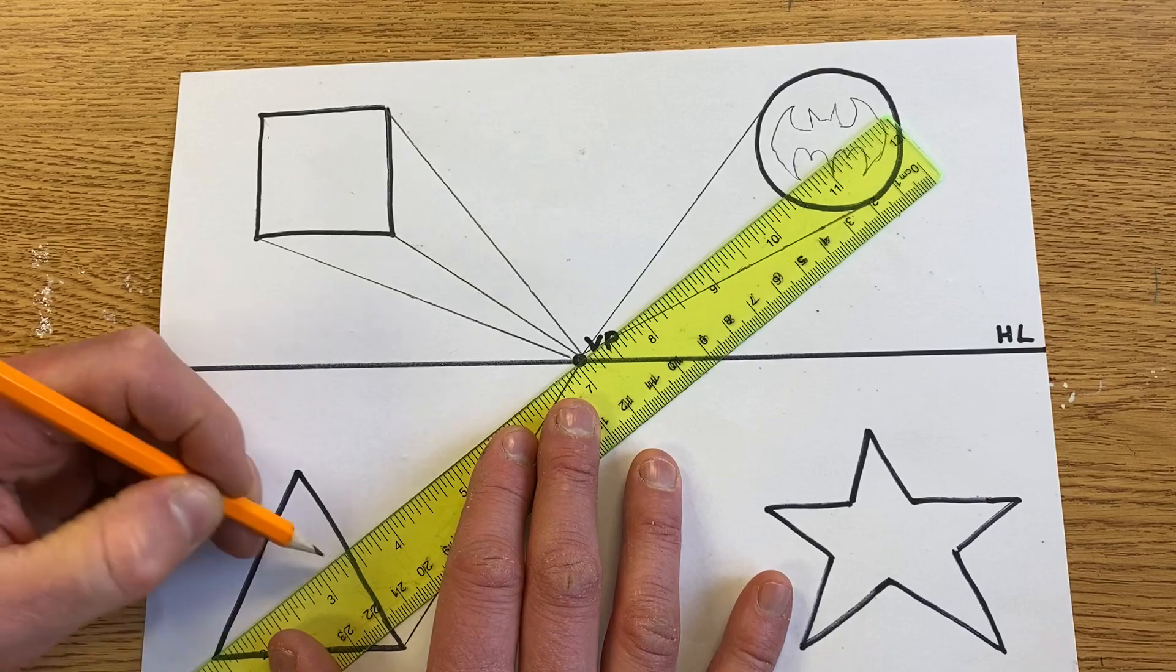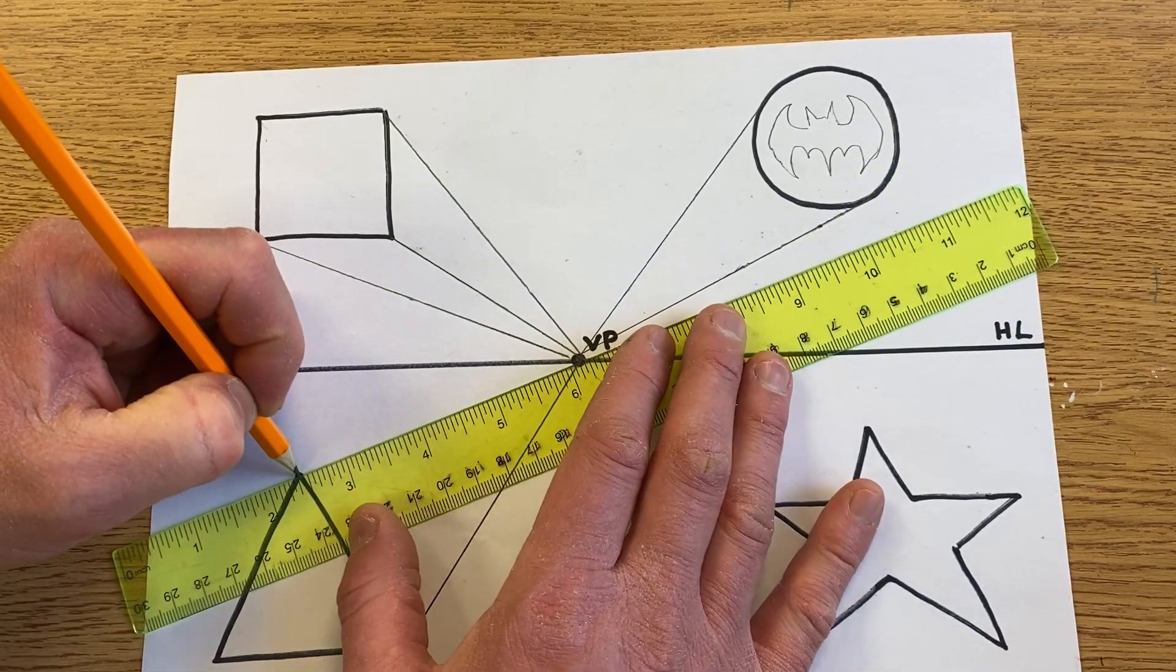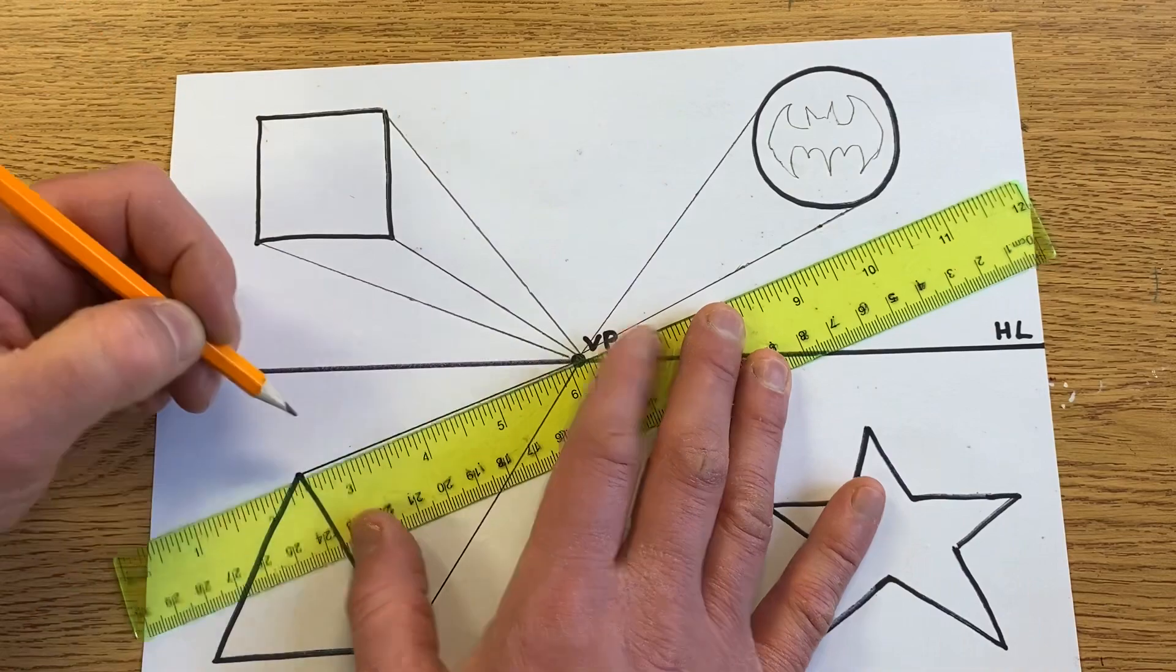That's going to cut through my shape, so I'm going to skip it, go to the top, and the triangle's done.